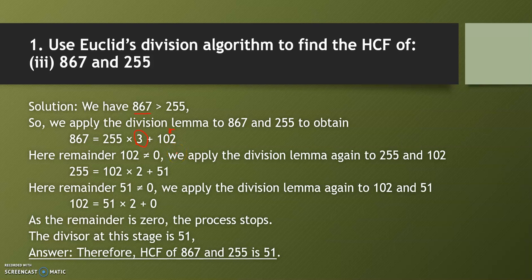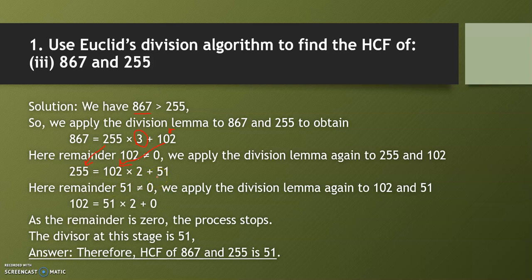Since the remainder 102 is not equal to zero, apply the division lemma again to 255 and 102. So 255 becomes the dividend and 102 becomes the divisor. Divide 255 by 102 — it divides two times and the remainder is 51.